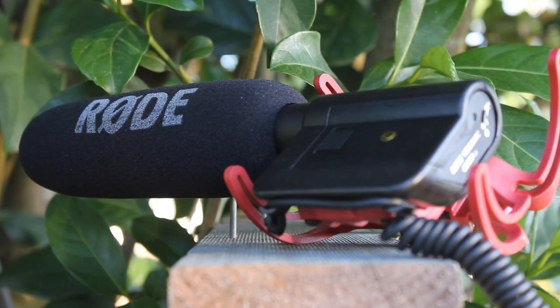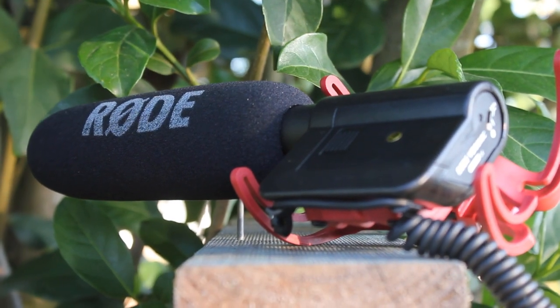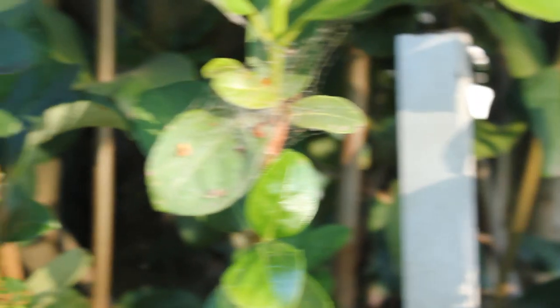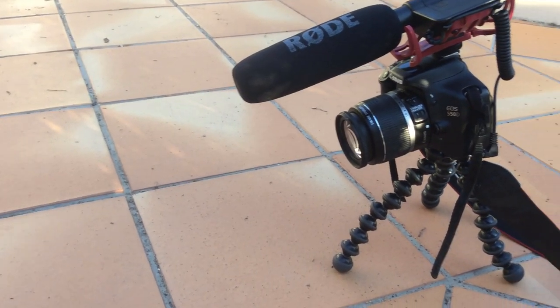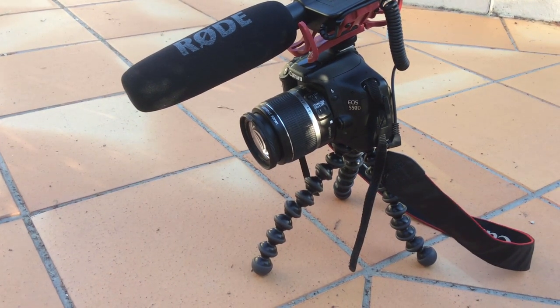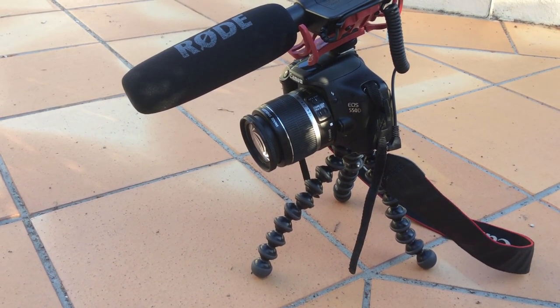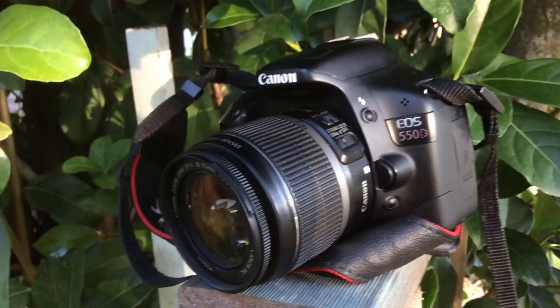I got a new tripod as well, so I can get better angles from all my shots. Most excitingly, I have received a new camera. It is a Canon EOS 550d or a Rebel T2i. This camera is a little old; however, still a whole lot better than my last one.